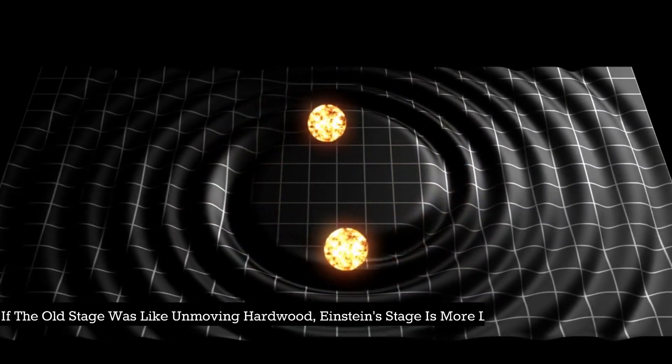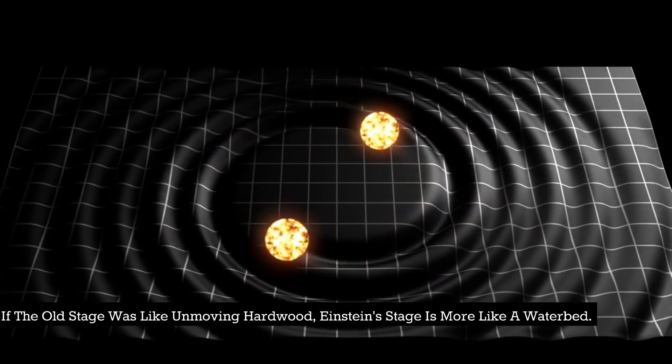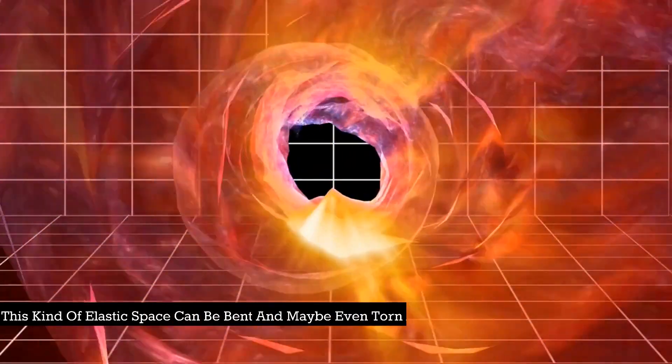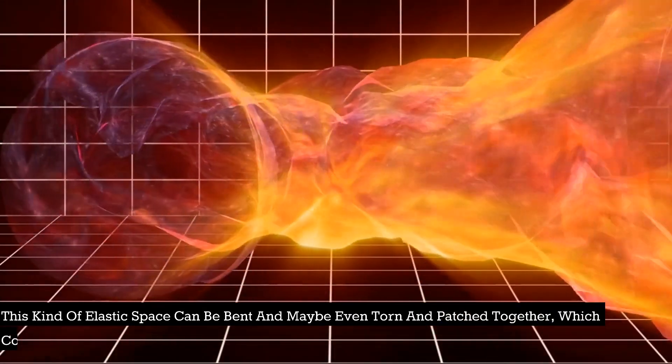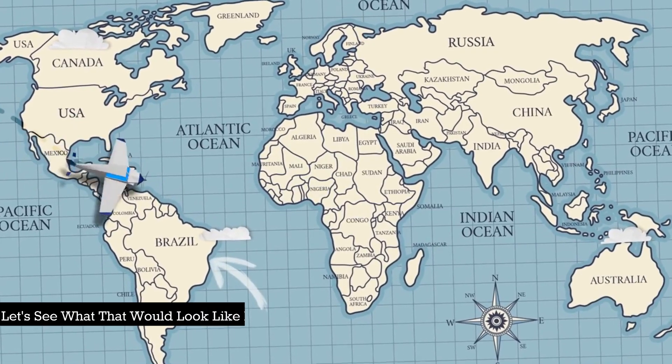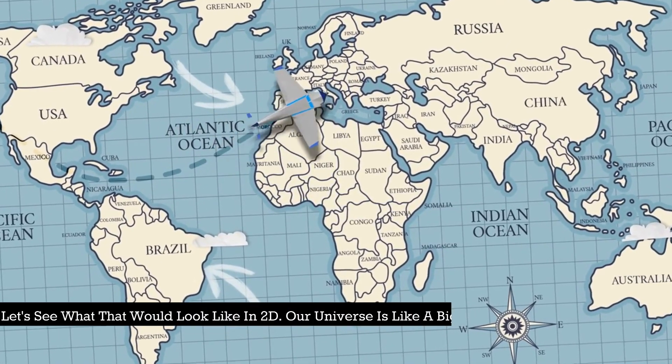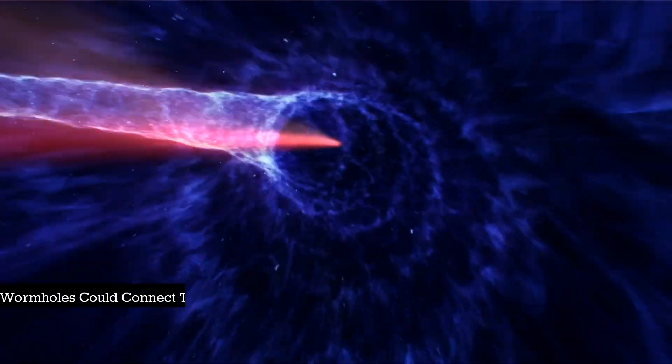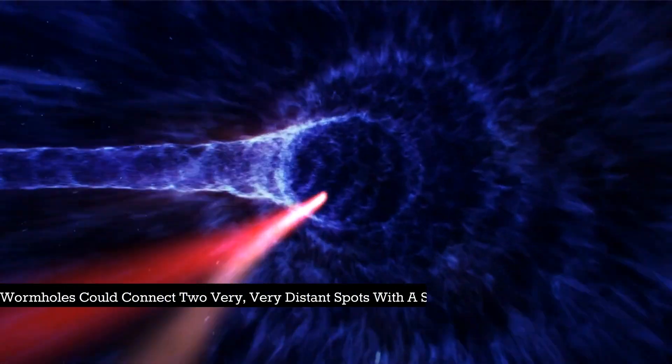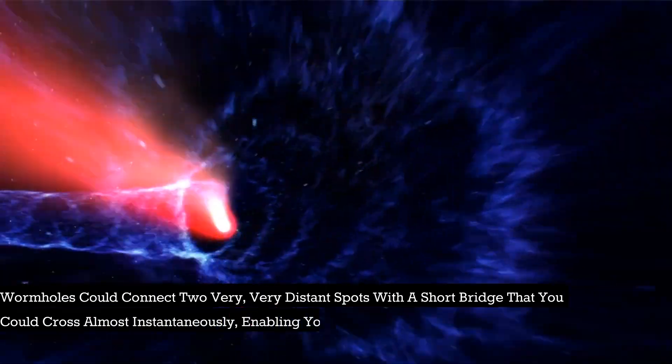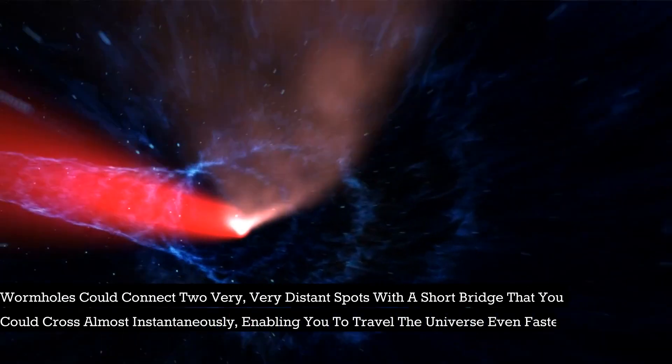The things on the stage can affect the stage itself, stretching and warping it. If the old stage was like unmoving hardwood, Einstein's stage is more like a waterbed. This kind of elastic space can be bent and maybe even torn and patched together, which could make wormholes possible. Let's see what that would look like in 2D. Our universe is like a big flat sheet bent in just the right way. Wormholes could connect two very distant spots with a short bridge that you could cross almost instantaneously, enabling you to travel the universe even faster than the speed of light.